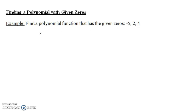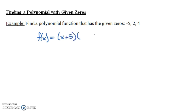We want a polynomial function f(x) such that when you plug in -5, you get an output of 0. So f(-5) = 0. We also want f(2) = 0 and f(4) = 0. If -5 is going to be a zero, then x + 5 should be a factor of our polynomial.